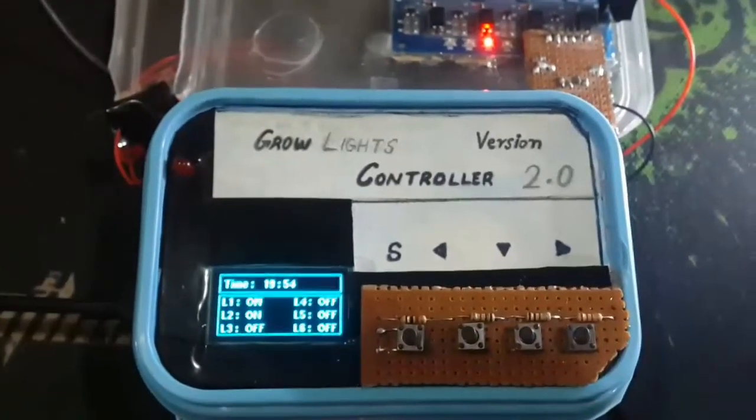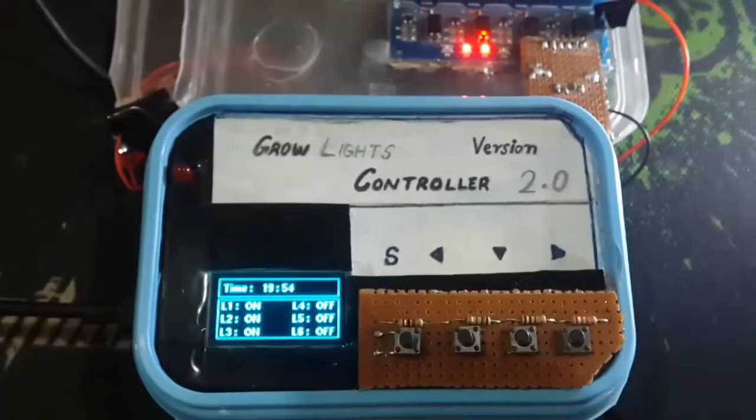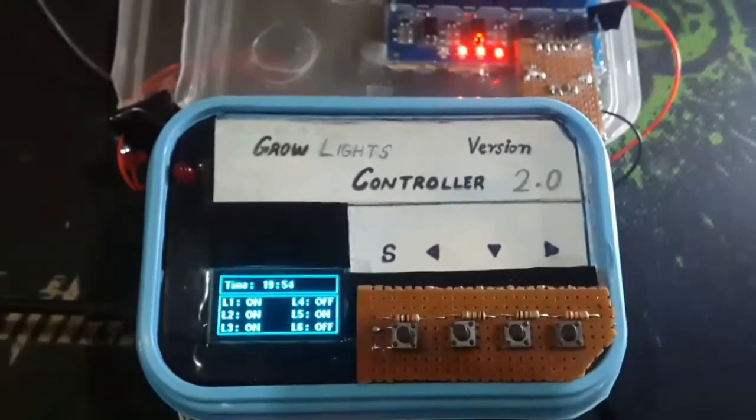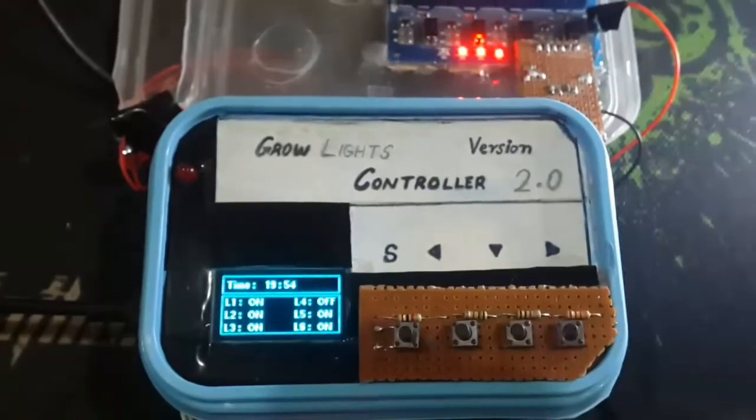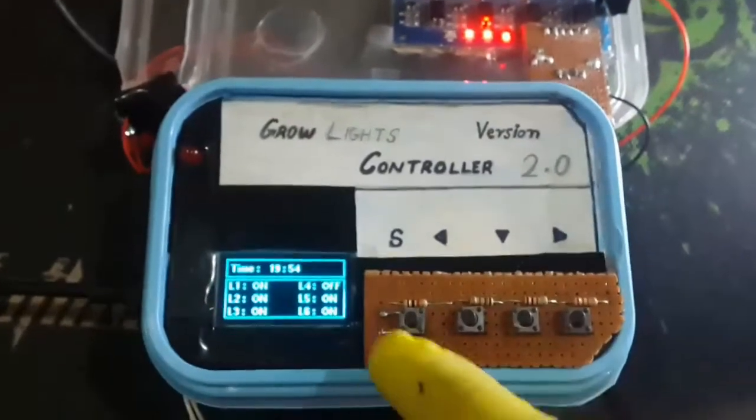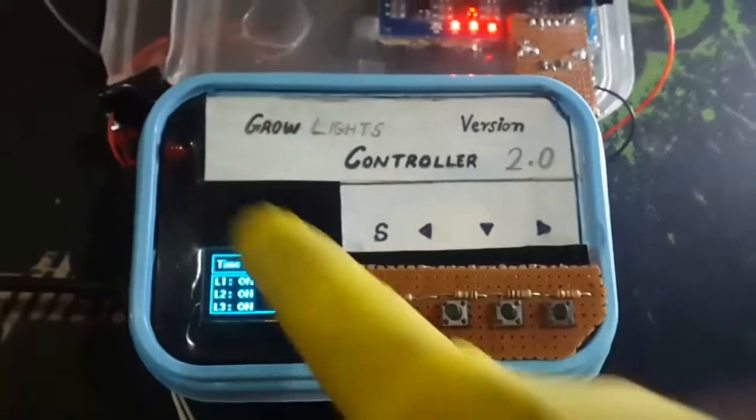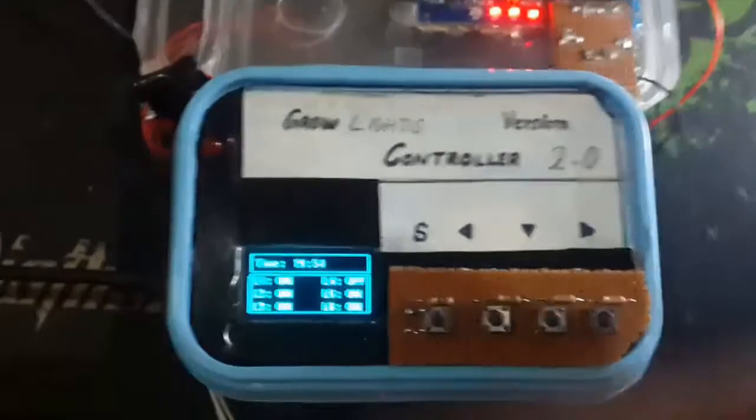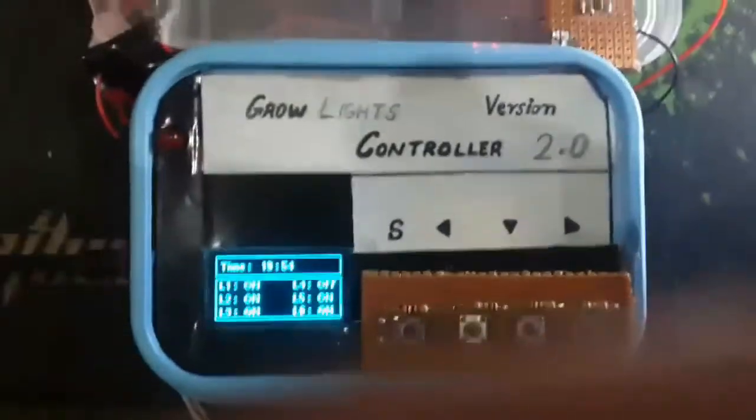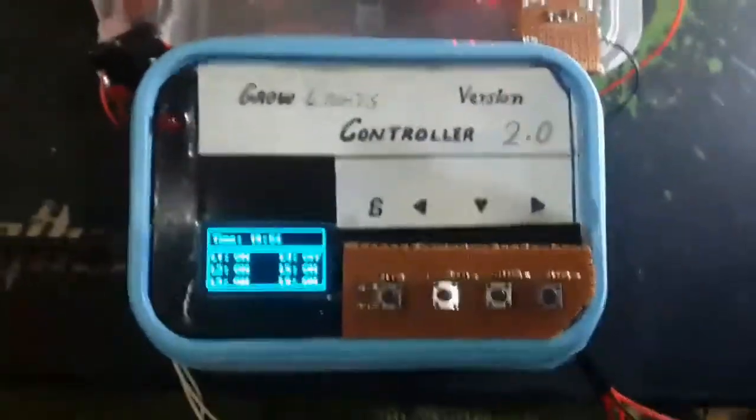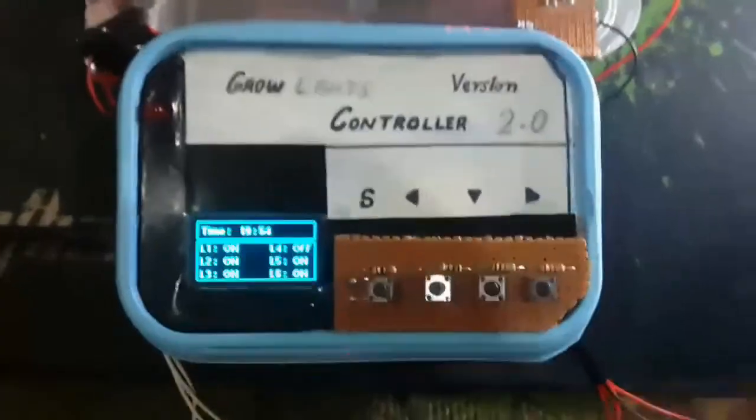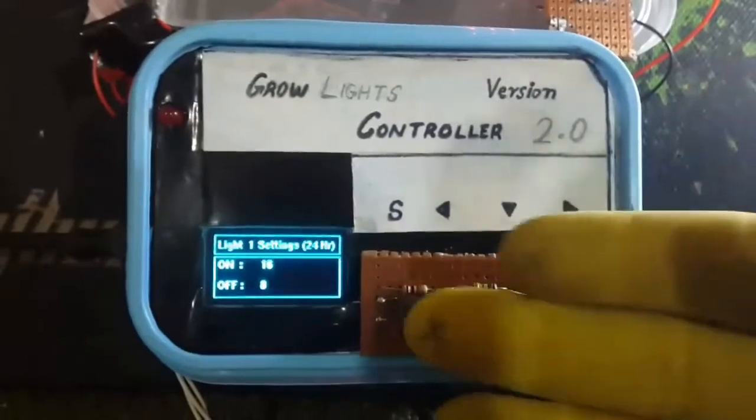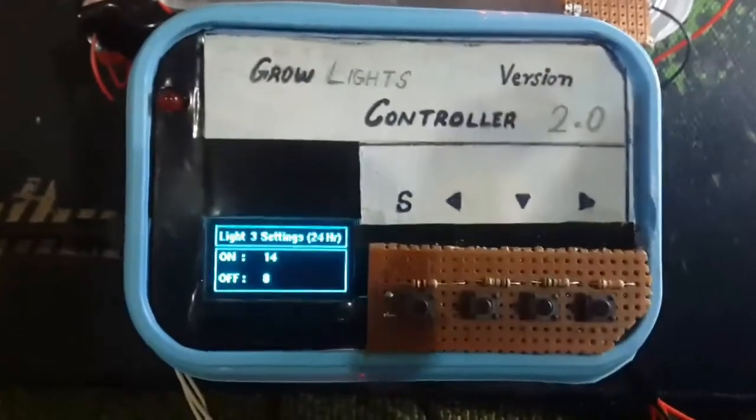On the main screen it's showing the status for all the lights it can control. Three of them are turned on, and the five and six lights are also turned on but they are not connected to the relays. If you have seen the previous video for the GrowBox controller with buttons, the menu is almost the same. If you press the right button it can scroll through all the different light settings.